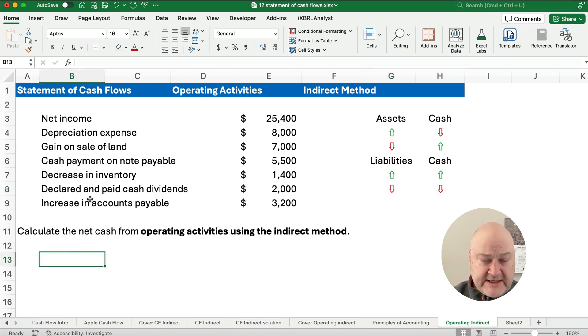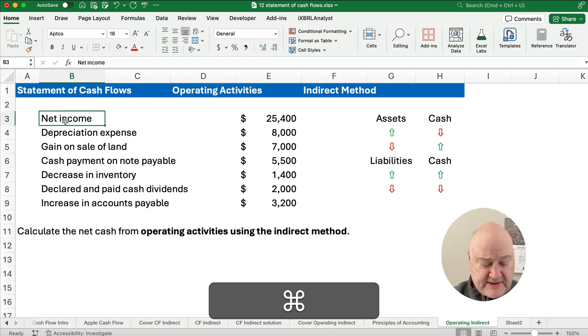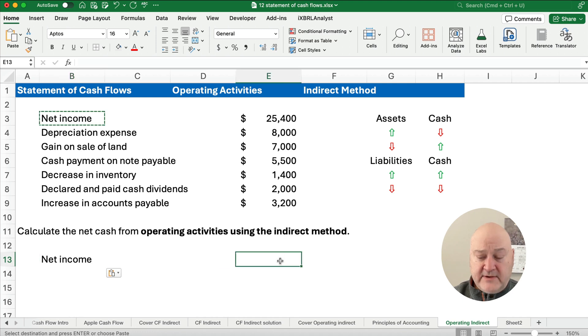So we're going to start with net income. I'm going to copy this. So net income, and the amount is $25,400. We just bring that down when we're working on the Operating Activity section.